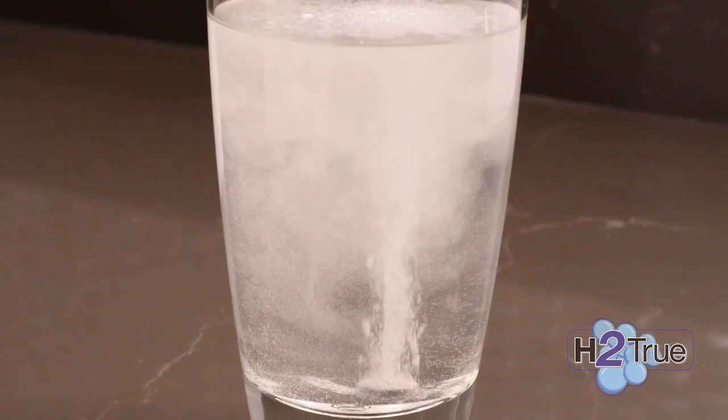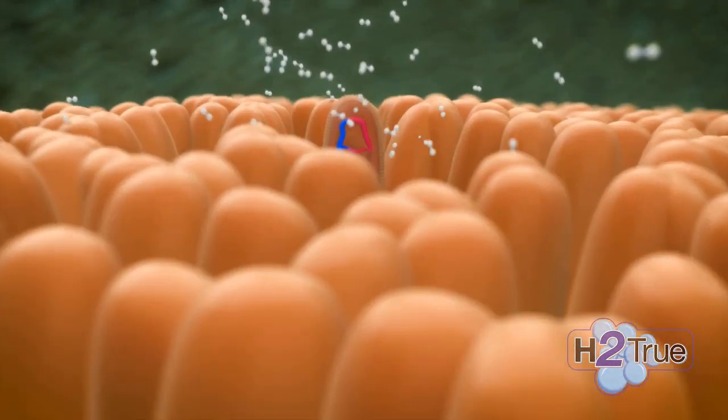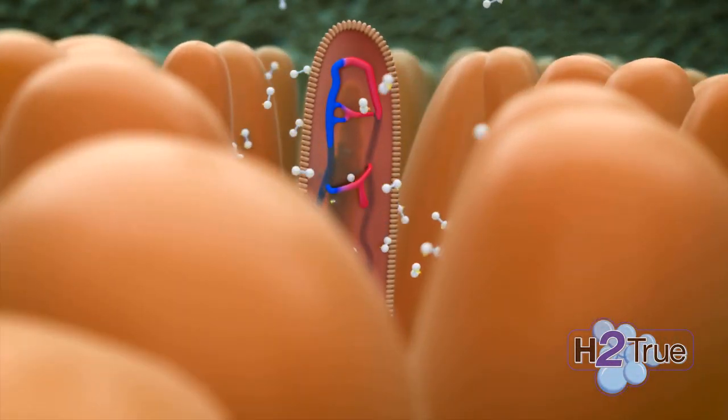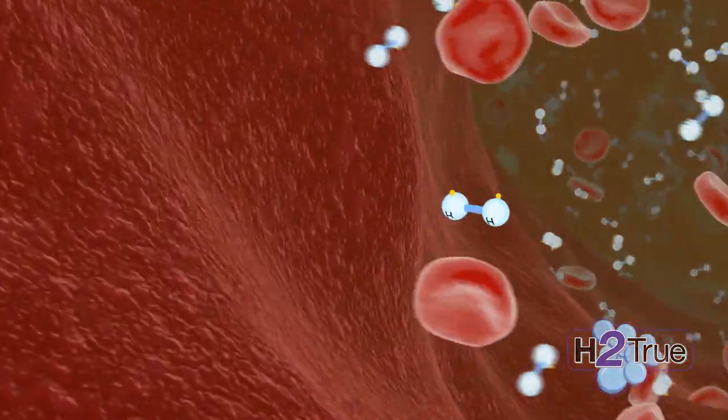With H2 True, the power of hydrogen is released from the water, creating pure H2 gas. The H2 molecule is small enough that it can easily pass through the stomach lining, immediately entering your bloodstream. In fact, hydrogen is so small it is rapidly absorbed by the cell.